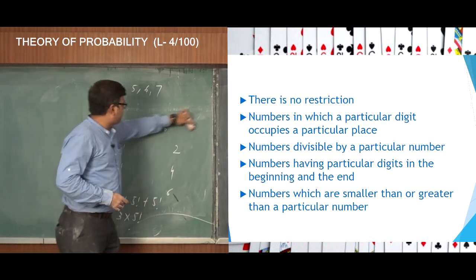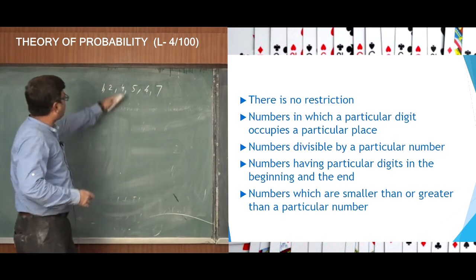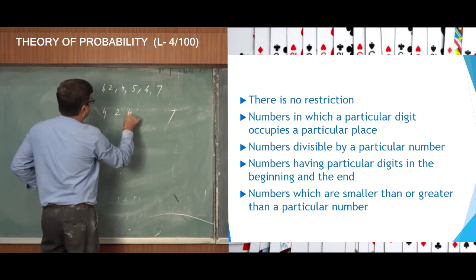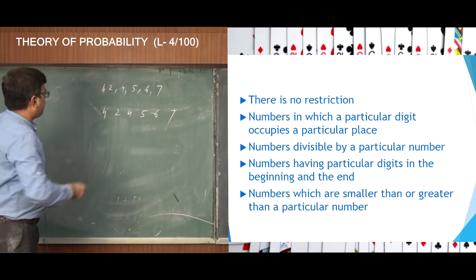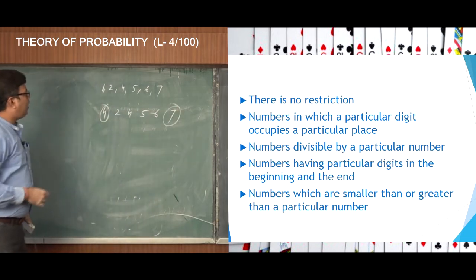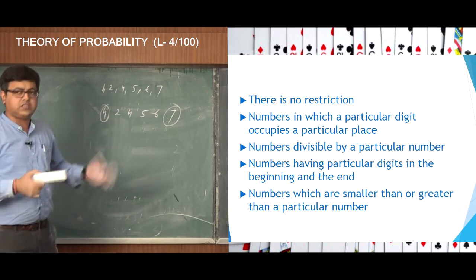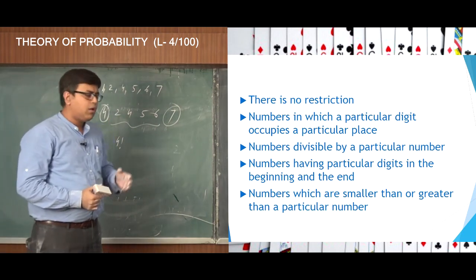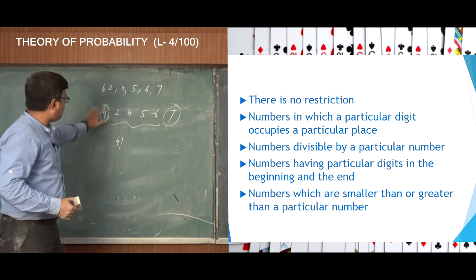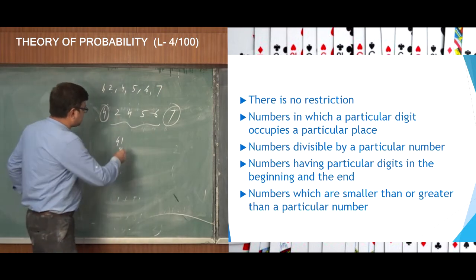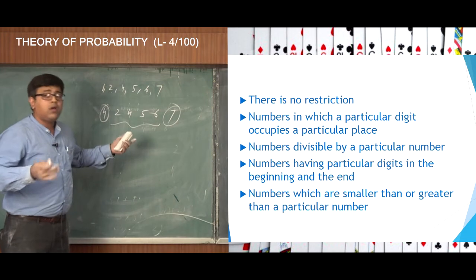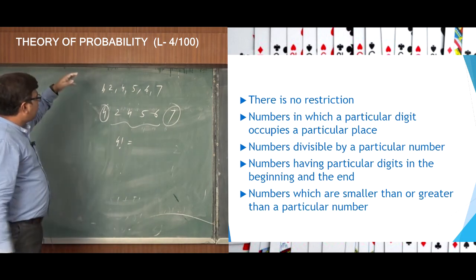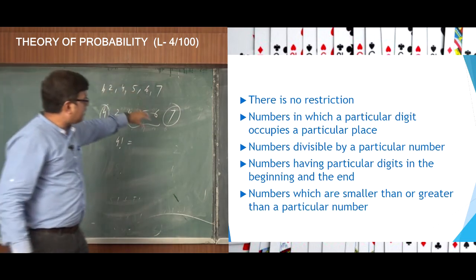Let us say we select 4 in the beginning and 7 at the end. If we fix 4 at the beginning and 7 at the end, we are left with the numbers 2, 5, and 6 — plus one more, so 4 remaining digits. Whatever numbers you fix, ultimately you have to arrange the remaining 4 digits in 4 factorial ways. Because there are 4 factorial ways of arranging the remaining digits after fixing 2 digits out of 6 at the beginning and end. So 4 factorial is the total count of such numbers.